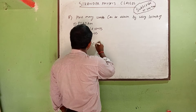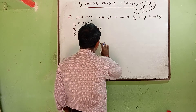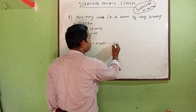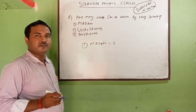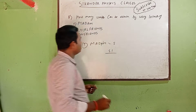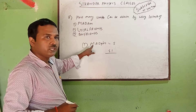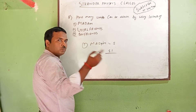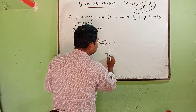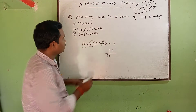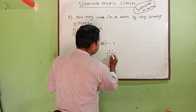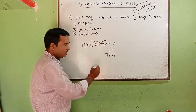Take the word 'madam'. How many letters are there? One, two, three, four, five — five letters. So you write five factorial divided by: how many letters appear twice? M appears twice, so factorial two; A appears twice, so factorial two.